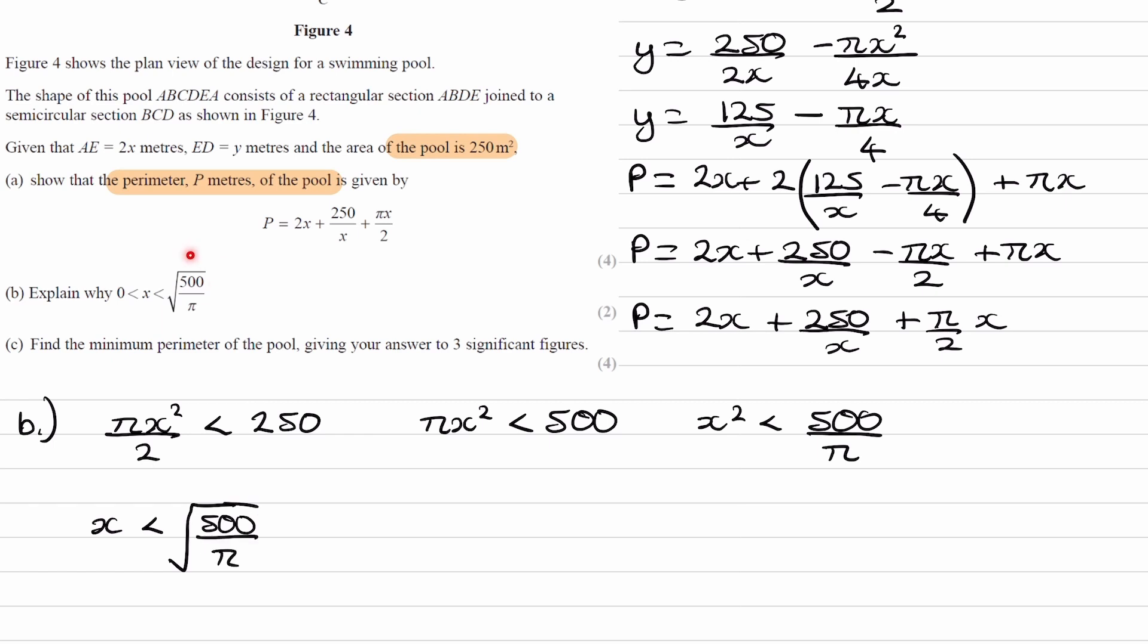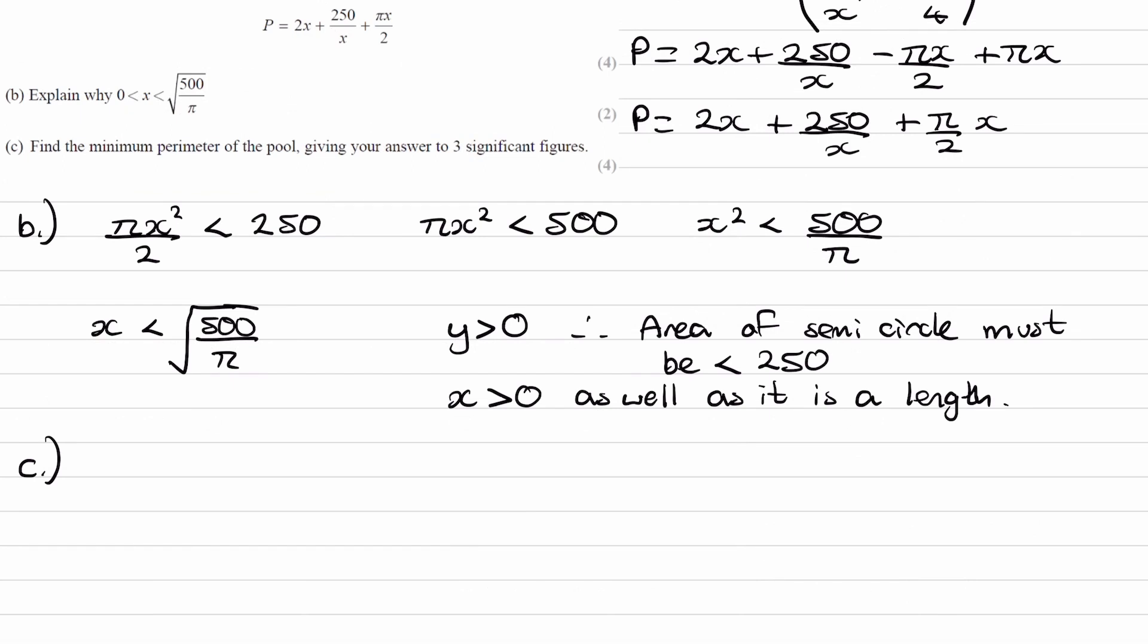That explains this half. Now for the left-hand side, well, x has to be bigger than 0, it's a length. So that explains the left-hand side of the inequality. And finally, for part c, find the minimum perimeter of the pool, giving your answer to three sig figs.